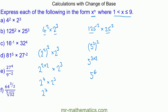For 25 cubed, we write 25 as 5 squared, then raise it to the power of 3. Using the power rule, this becomes 5 to the power of 2 times 3, which is 5 to the power of 6. Finally, using the multiplication rule, we add the powers with the same base, giving us 5 to the power of 12.